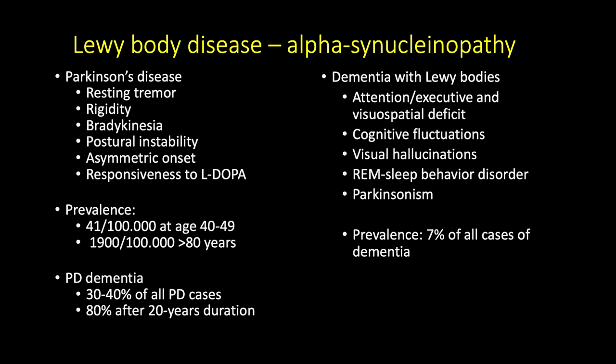The distinction is important because management differs — different medications are used, and more caution is needed with certain medications. Patients with dementia with Lewy bodies typically complain of attention deficits, problems with task execution, and profound visuospatial deficits — difficulty moving in space, getting disoriented. There are characteristic cognitive fluctuations: dramatic changes in cognitive functioning that can occur within a single day. Patients may appear very somnolent and inattentive in the morning, then much more alert a few hours later.